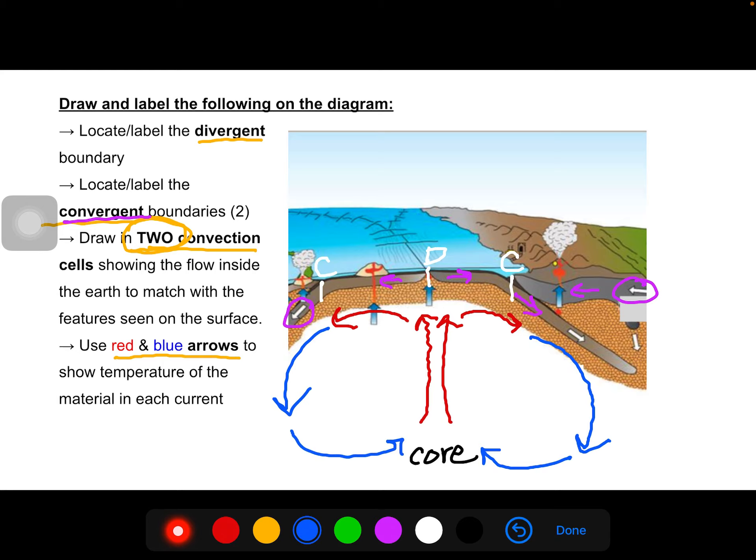So again, we drew in our two convection currents, and we have them, like we talked about, symmetrically. So we have the red coming up together and the blue sinking down together. If we were to see other convection currents happening, we would have one on this side with that cool sinking, helping to push this plate towards the other one as well. If your diagram is looking something like this, we want to rethink that. That's not something that's going to happen.